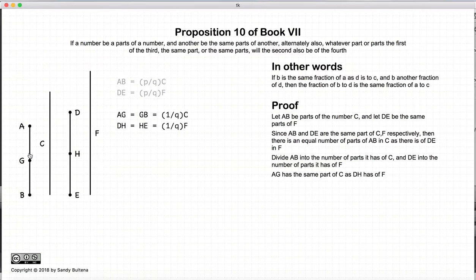So AG, GB is some fraction of C, DH and HE is the same fraction of F.